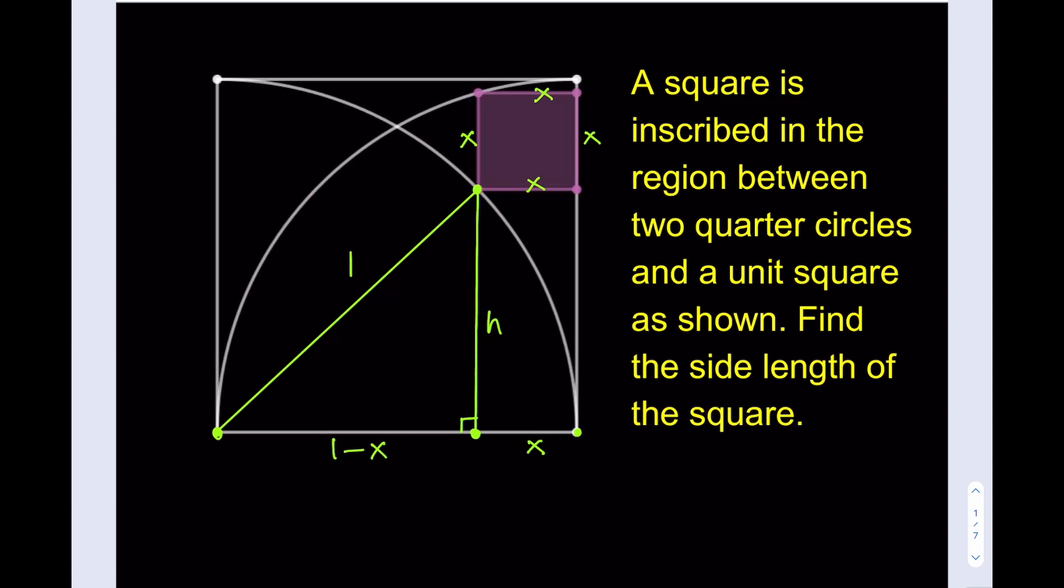And the hypotenuse should also be the radius of the quarter circle, which is 1. So, I basically got a right triangle. Here's the plan. Now, I'm going to write the Pythagorean theorem for this triangle, but that's not enough. I do need another right triangle. And I'll get that, and we'll put it together. And this is how it works.